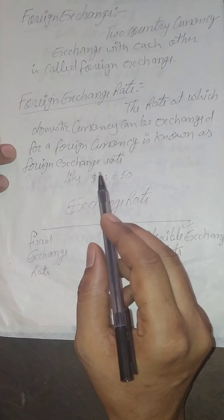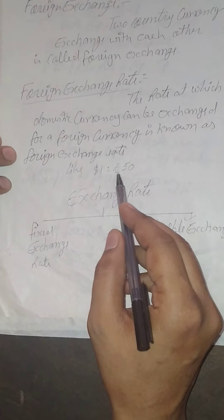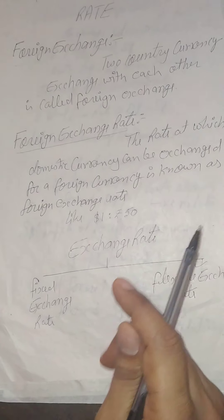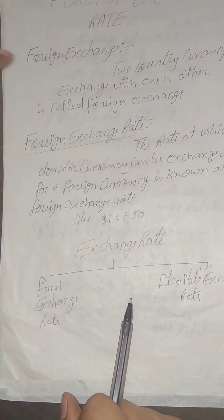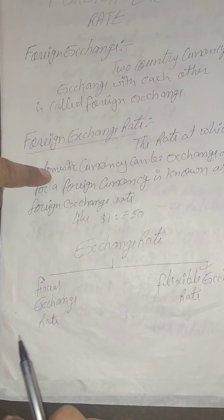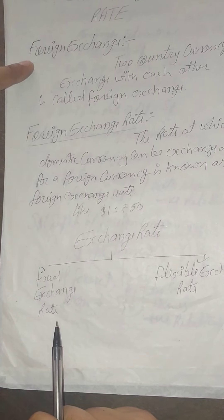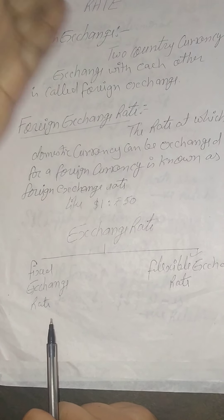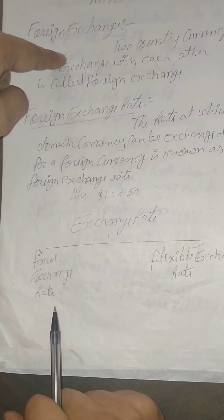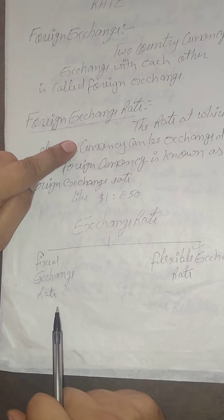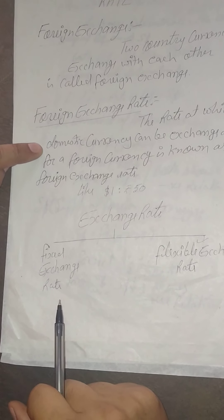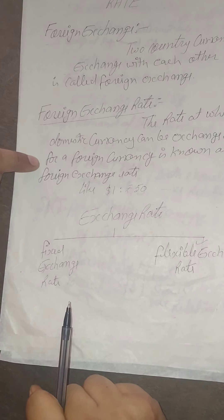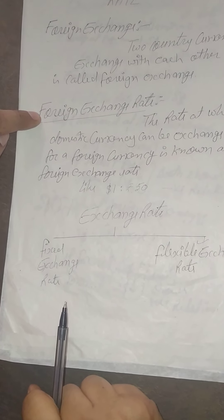For example, one dollar exchanges with 50 rupees. We have discussed two different concepts: foreign exchange and foreign exchange rate. Foreign exchange is when two countries' currencies exchange with each other. Foreign exchange rate shows the rate at which the domestic currency can be exchanged for a foreign currency — that is called foreign exchange rate.